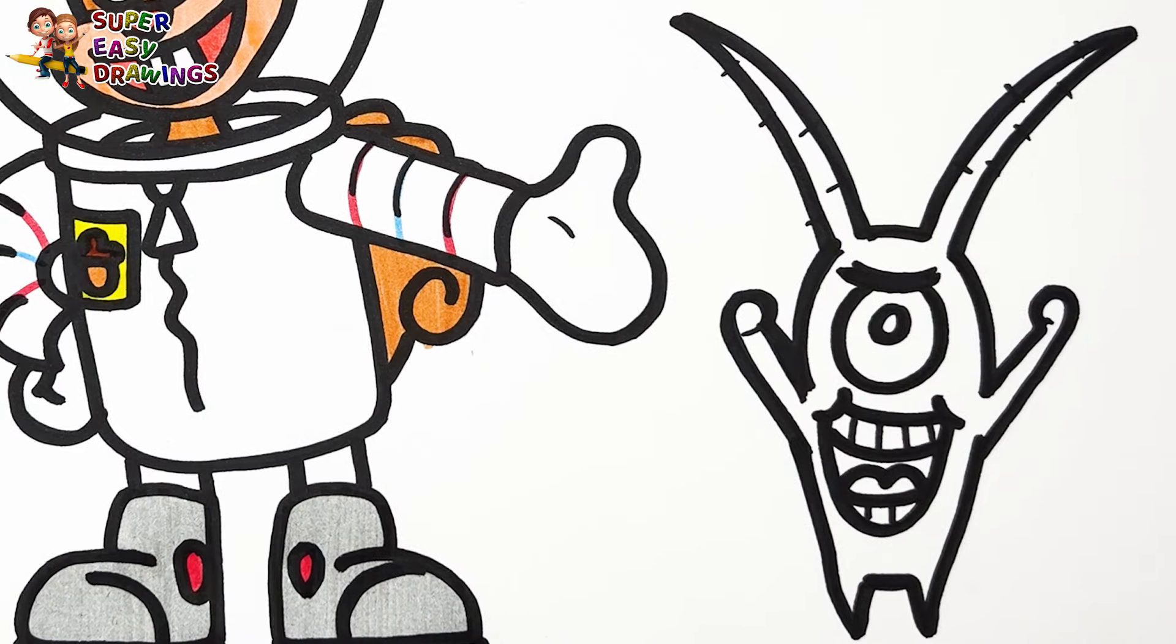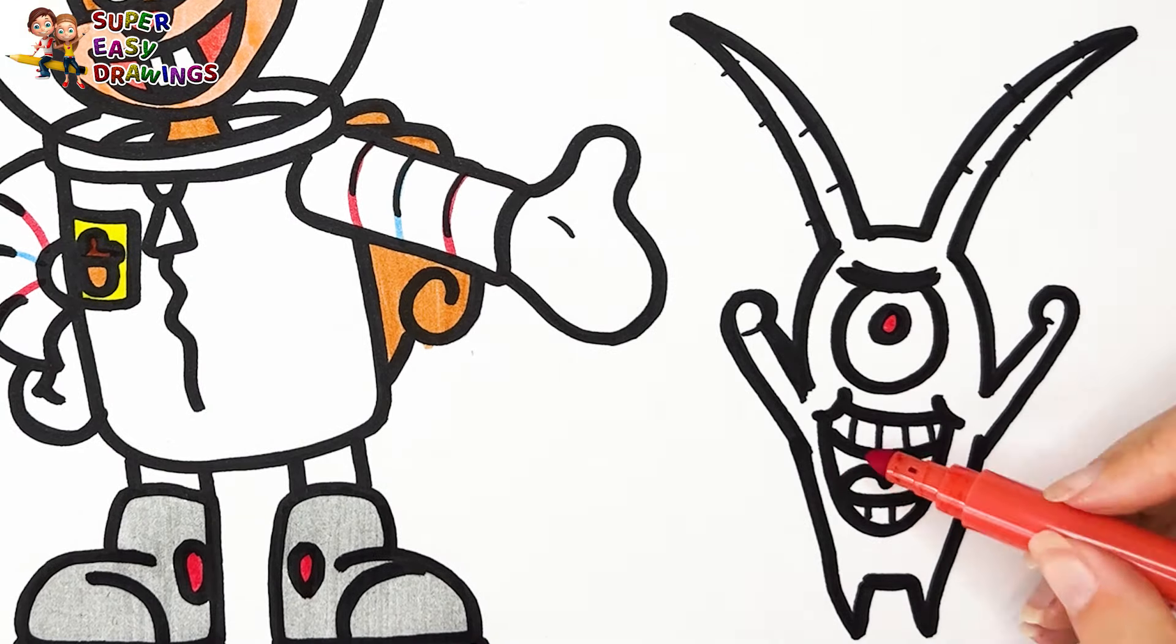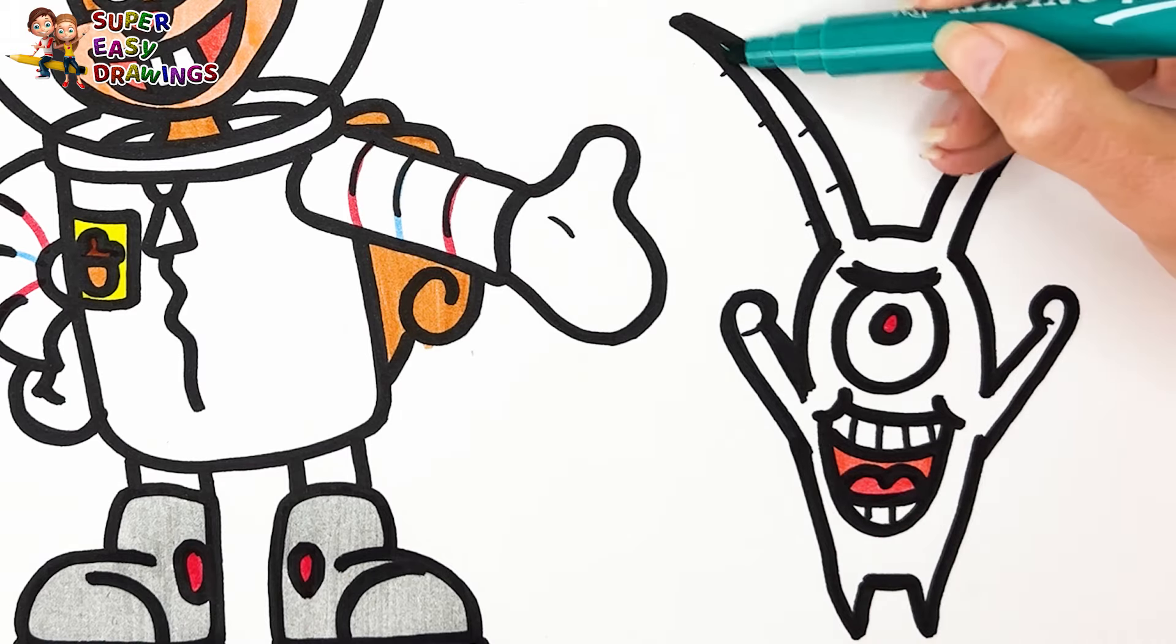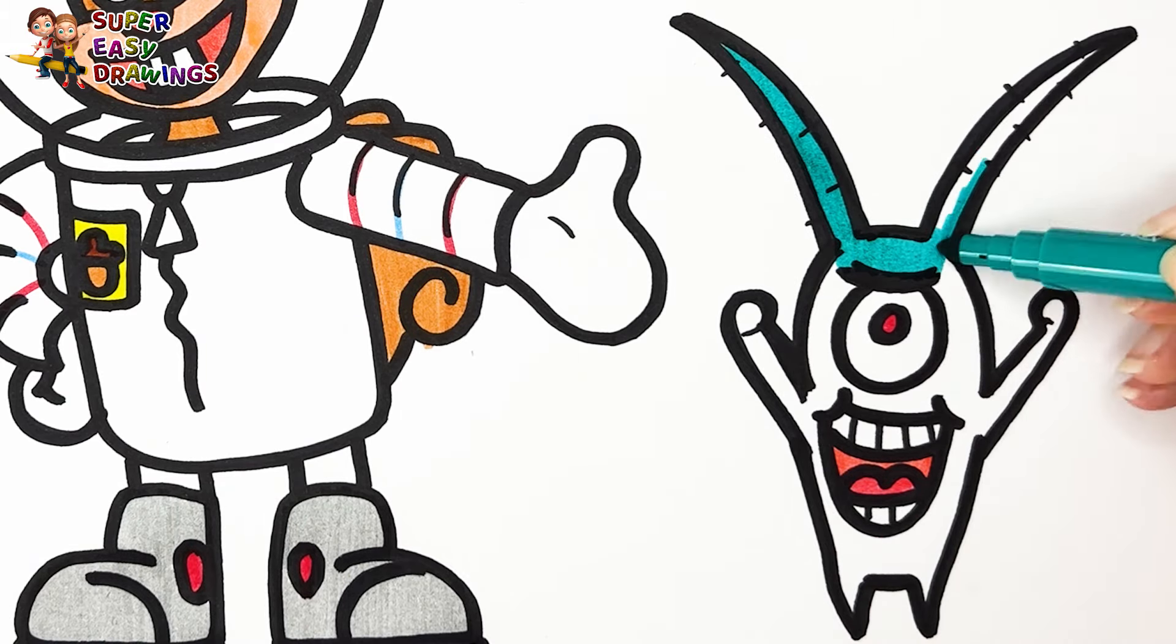For Plankton's eye I use red here. Then I use two different red markers for his mouth. I color his skin with this marker.